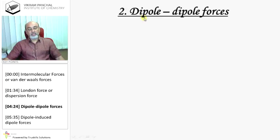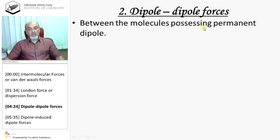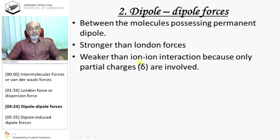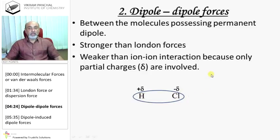Second type of force is dipole-dipole force between the molecules possessing permanent dipole moment. This kind of force is stronger than London force and weaker than ion-ion interaction, because in this case, only partial charges are involved. For example, HCl is not an ionic compound, it is covalent, but because of electronegativity difference, chlorine becomes partly negative and hydrogen partly positive.